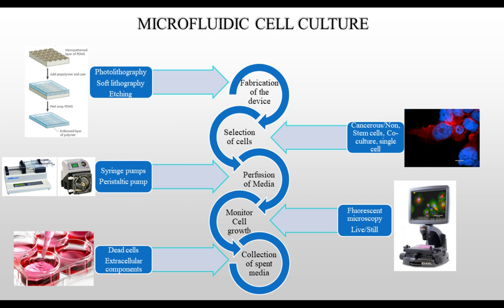Let us see the steps involved in establishing a successful microfluidic culture. The first step is the fabrication of the device, typically carried out using photolithography and soft lithography. After which, you select the type of cell to investigate — cancerous or non-cancerous — and based on their properties such as adherent or non-adherent, you may need to fabricate a different design of microfluidic chip. Then you perfuse media into the chip using a syringe pump or peristaltic pump. The chips are monitored using live cell microscopy, and the spent media is collected, which contains extracellular components and dead cells.